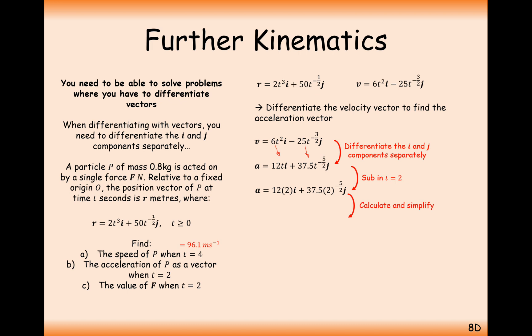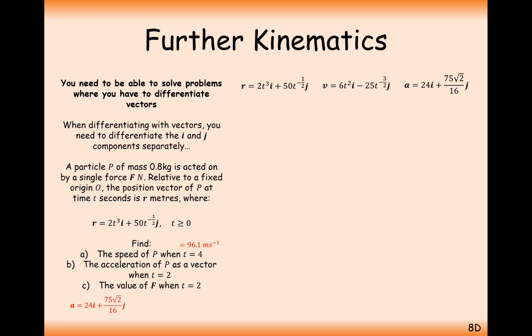And we want to work out the acceleration of P when the value for time is equal to 2. So plug the value for 2 in. And we get a is equal to 24i plus 75 root 2 over 16. Now we leave it like that. If it said find the magnitude of the acceleration, we would have to do a bit of Pythagoras calculation there. But acceleration is fine to leave as a vector.